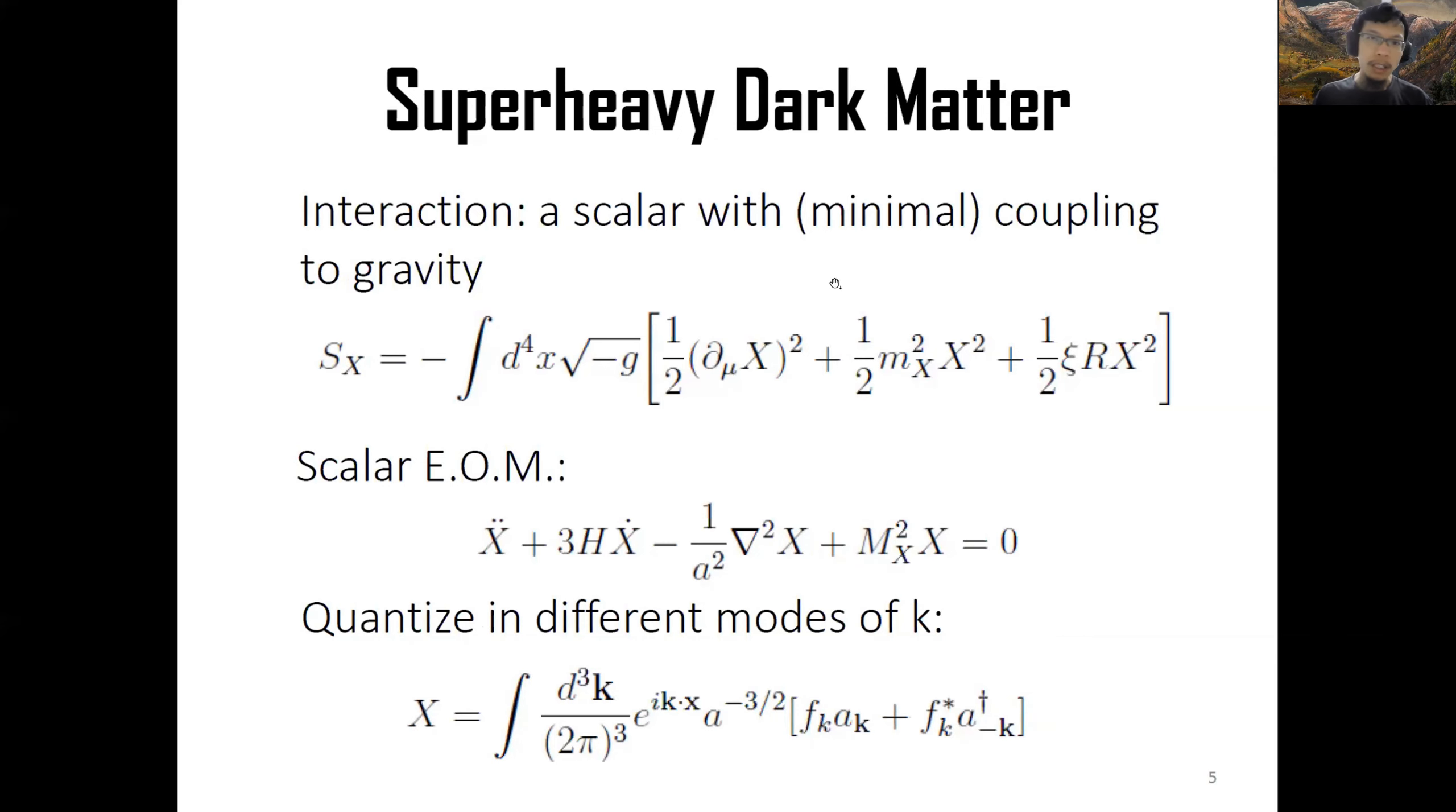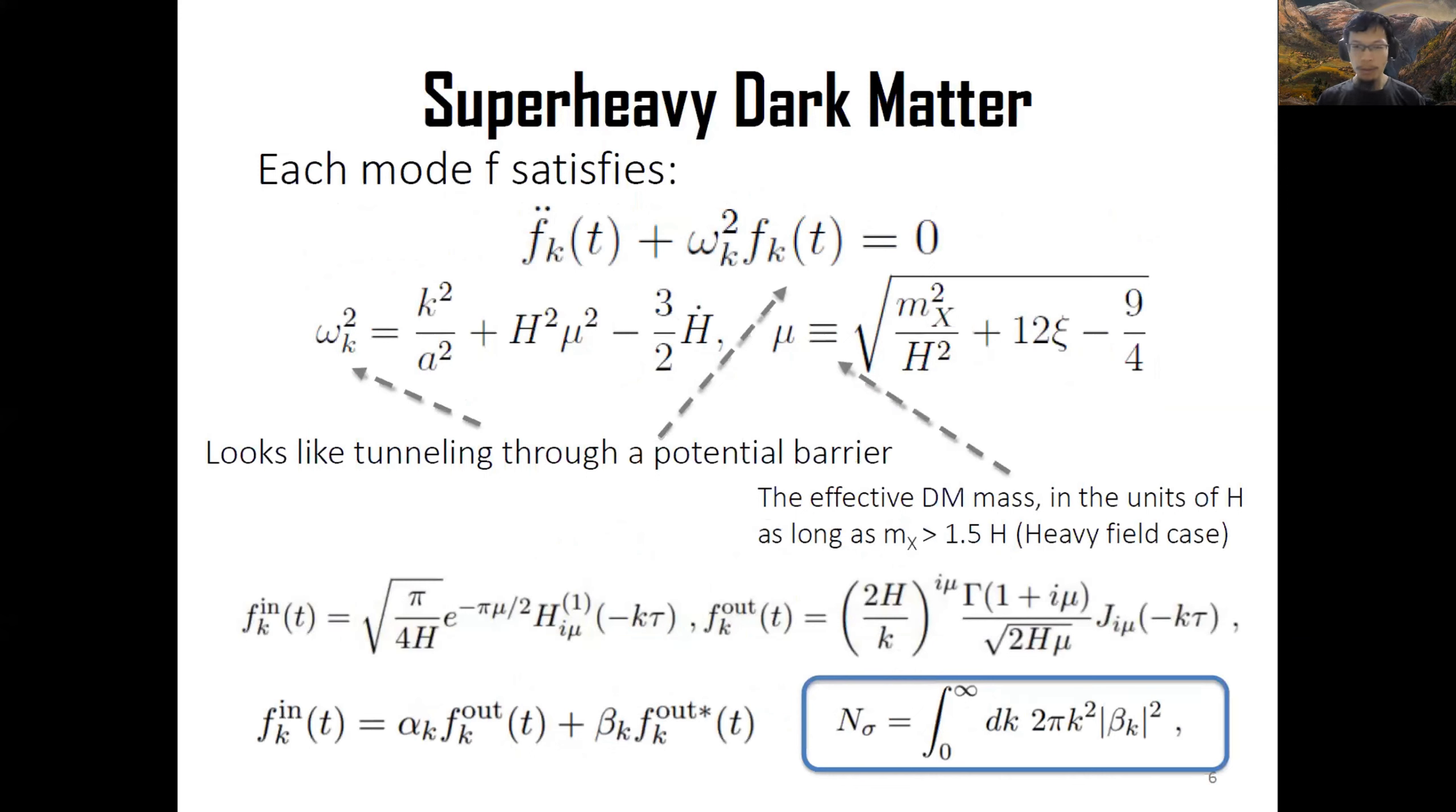Ignoring all these details, let's begin with the simplest superheavy dark matter, which is a scalar with minimal coupling. You can see it's basically itself - the standard canonical kinetic term and its mass. That's it. It's Z2 protected so it's stable. It doesn't couple to anything else. Later, I would set this zeta to zero, so it doesn't really have a non-trivial gravitational coupling. The equation of motion can be easily written. We quantize different modes.